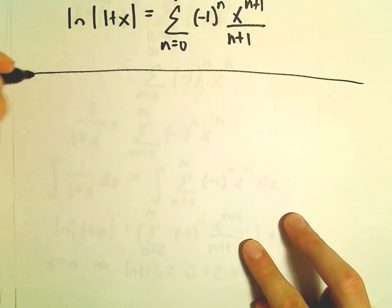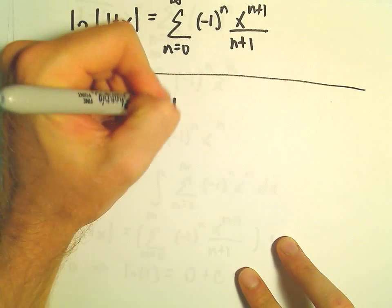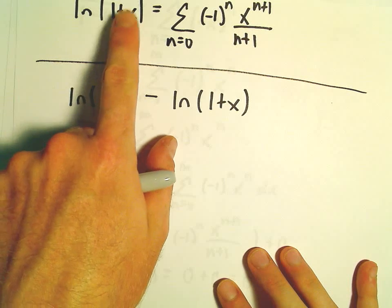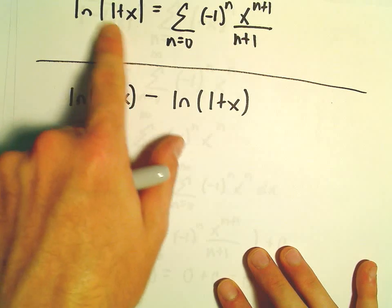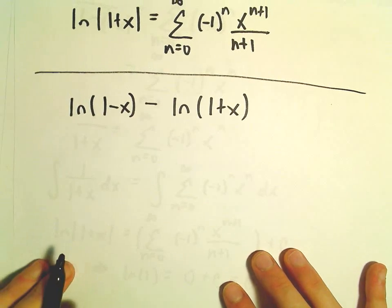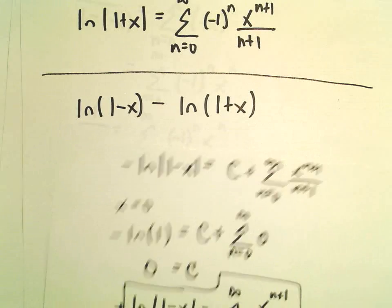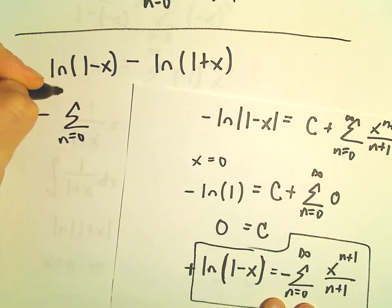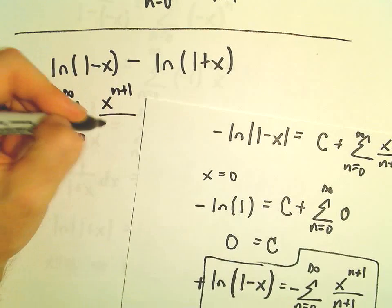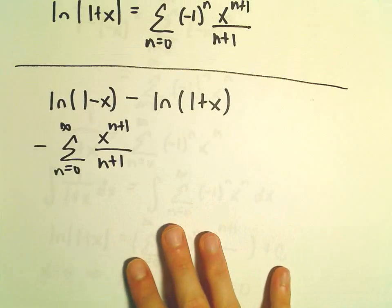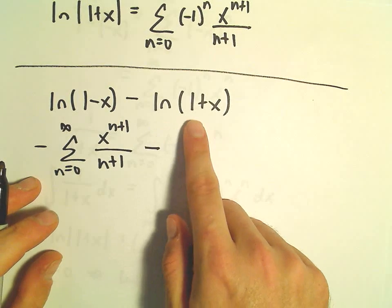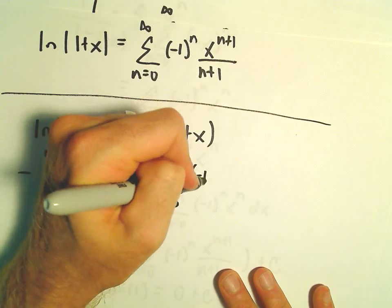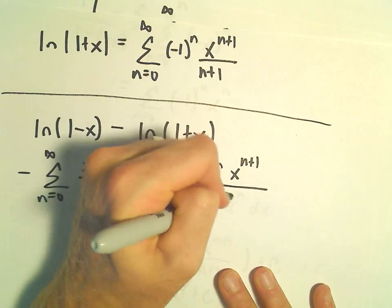Going back to our original expression — ln(1 minus x) minus ln(1 plus x) — this series representation is only valid for x between negative 1 and positive 1, so both arguments are always positive and we can drop absolute values. So ln(1 minus x) gives us the negative of the series n equals 0 to infinity of x to the n plus 1 over n plus 1. Now we subtract the series for ln(1 plus x), which is n equals 0 to infinity of negative 1 to the n times x to the n plus 1 over n plus 1.